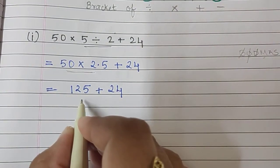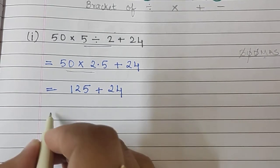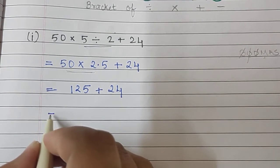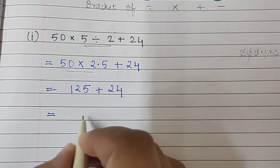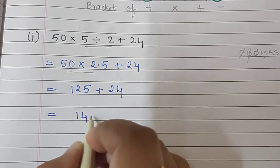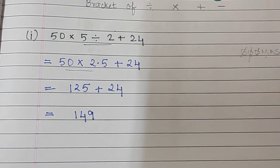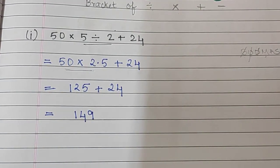So 50 into 2.5 is 125, and we copy down the rest. 125 plus 24 is 149. It's very simple. Moving to the next sum.